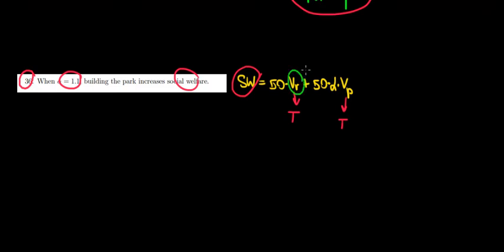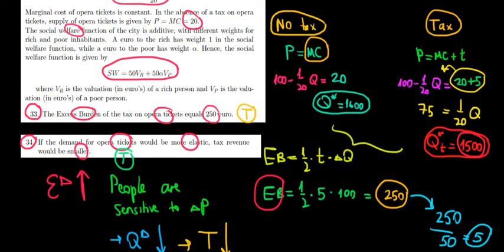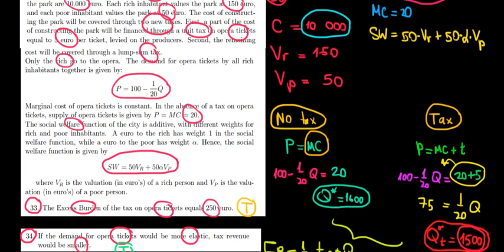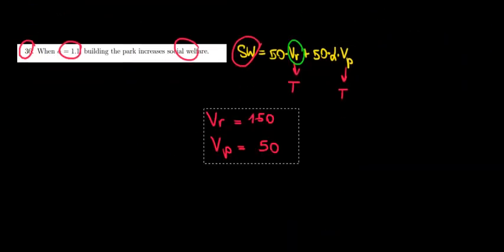So let's write that over here. The valuation of the rich person is going to be the following: the benefit from the park is also given to us. The rich person benefits the park at 150 euros. Let's write that. So this one's at 150 euros and the poor person only at 50.